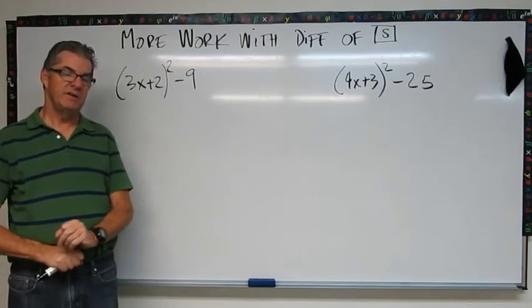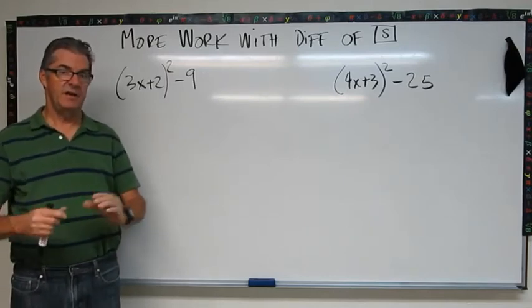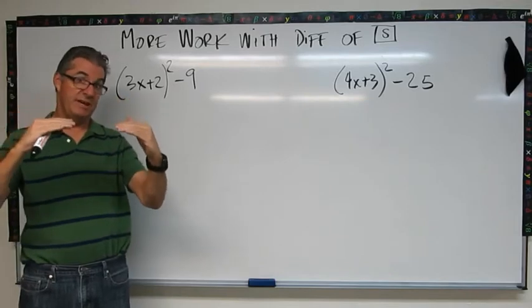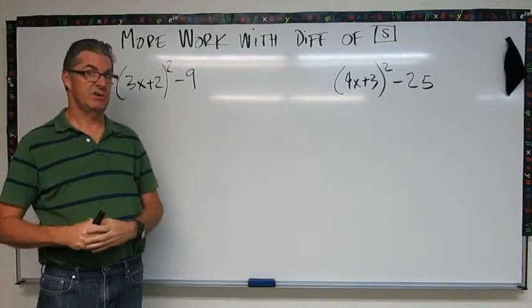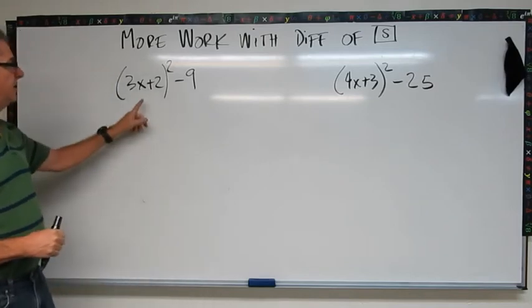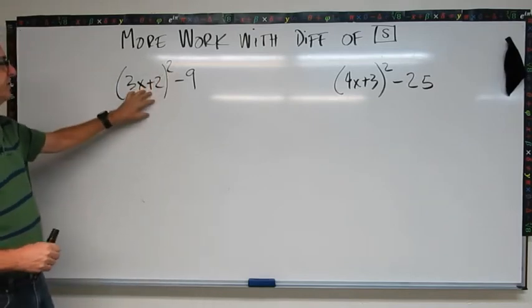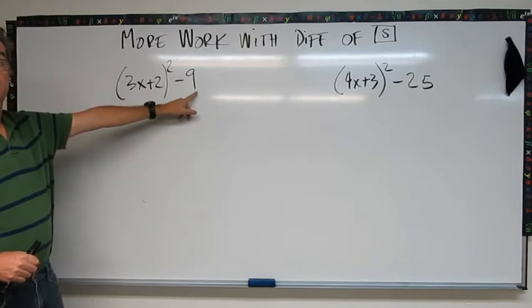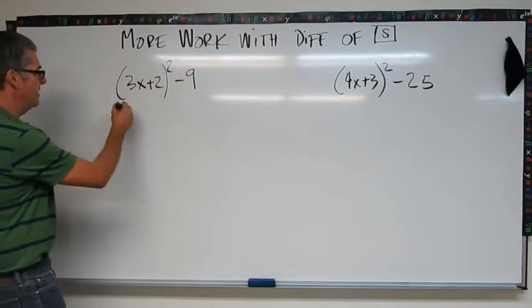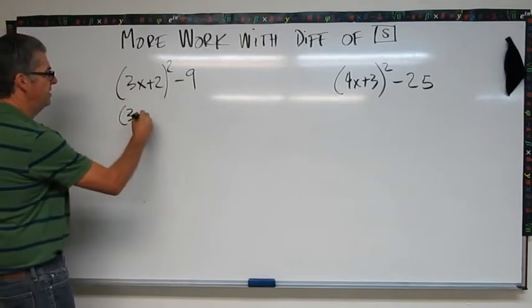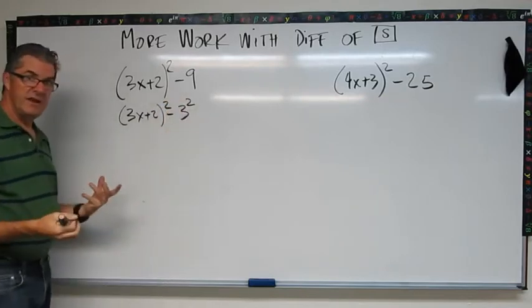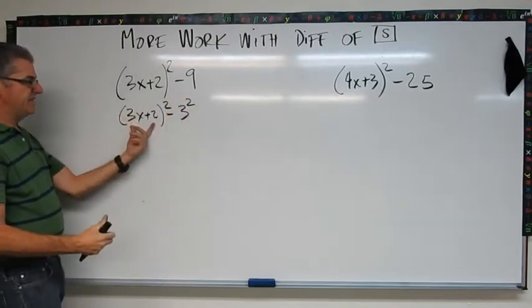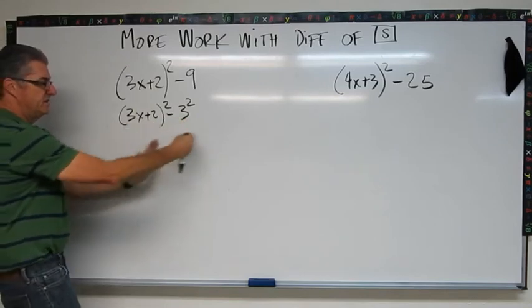Alright, a couple more problems. Now buckle your seat belt—these are going to get a little bit more complicated, and it becomes more important that you keep track of your algebra, keep your signs right, combine your like terms. So let's take a look. (3x+2) squared. Here's a square: 9 is 3 squared. So we can rewrite this: (3x+2) squared minus 3 squared.